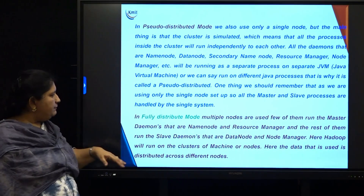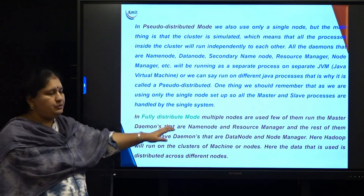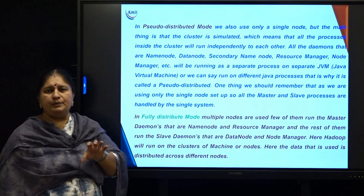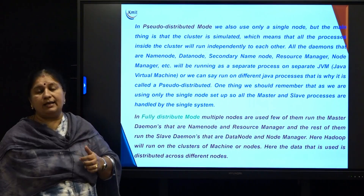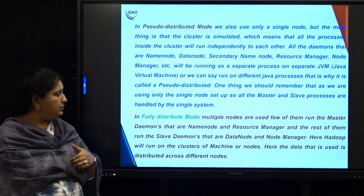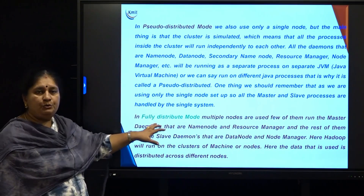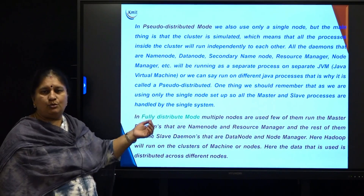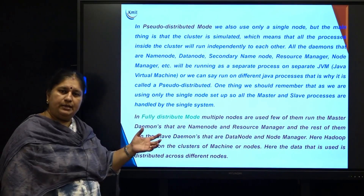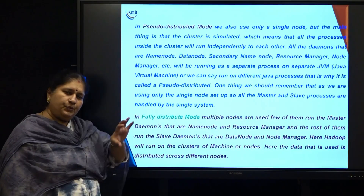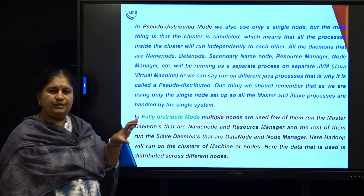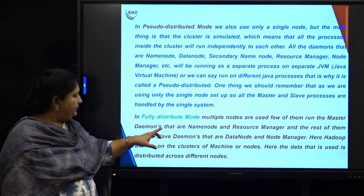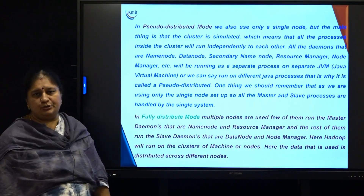The final one is fully distributed mode. This is the exact Hadoop cluster wherein multiple systems are connected over a network. You can see the resource manager, the name node, the data node, multiple name nodes — all the things we learned under Hadoop architecture can be seen under fully distributed mode.